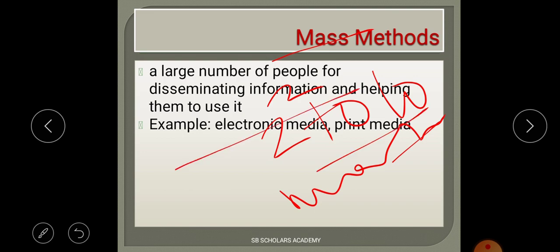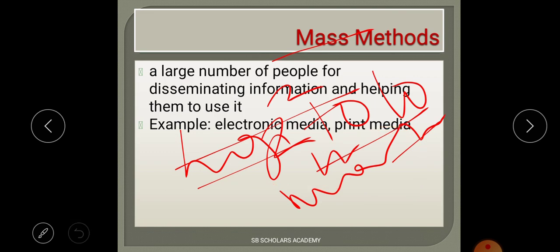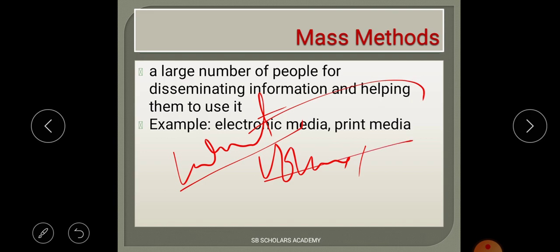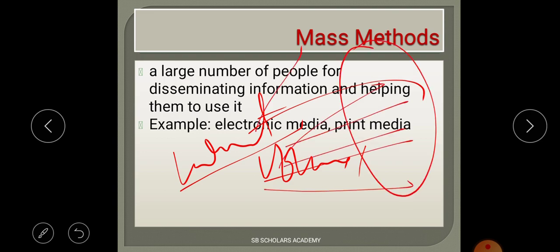Examples of mass method include electronic media and print media. Print media includes leaflets, posters, and magazines. For example, when a magazine is published in 100 units distributed to 100 people, that is considered a mass method because the information is being disseminated to a large crowd or mob.